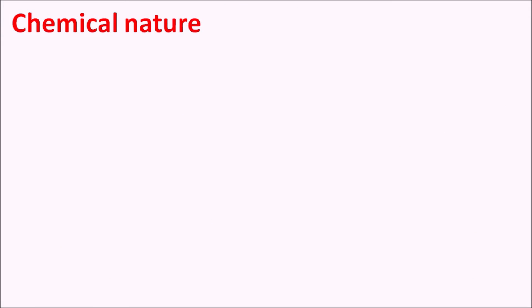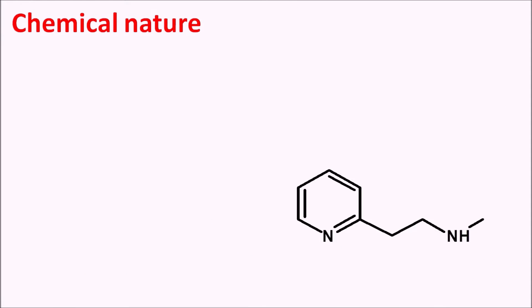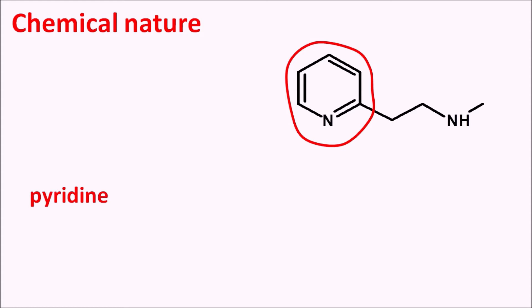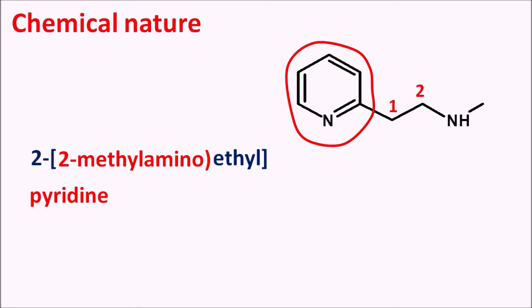First of all, let us see the chemical nature. This is the simple structure of betahistine. It has the pyridine ring system — in histamine it is the imidazole ring, but here it is the pyridine ring. The pyridine is connected to an ethyl chain, and at the beta position it has a methylamino group. That is the simple name 'betahistine' — a histamine derivative with a methylamino group at the beta position.